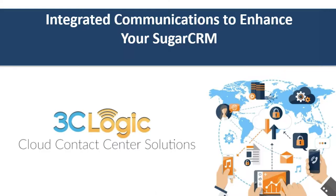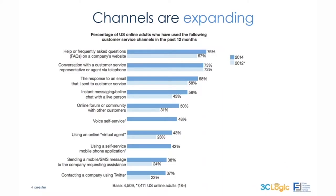Jumping right in, one of the most obvious challenges organizations have today is optimizing the different channels that individuals use. Most consumers will use anywhere between three to five different forms of communication in their discussions with organizations. While the primary default in the past was telephony, there's been an increasing level of diversification with other channels — SMS, texting, chat, self-service, social media like Twitter and Facebook.